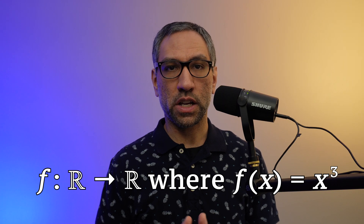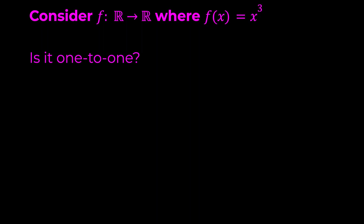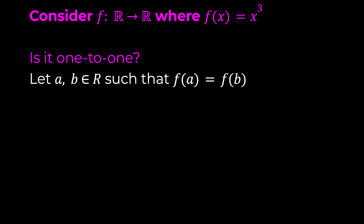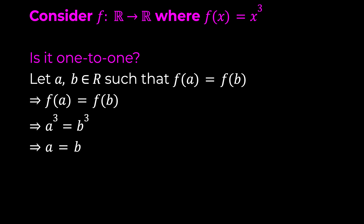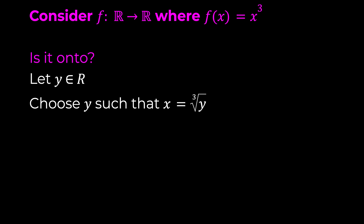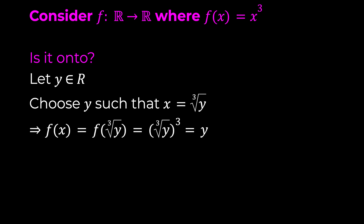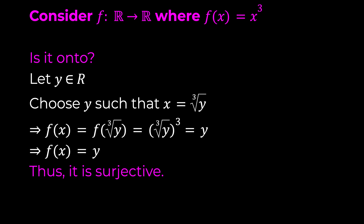Lastly, let's consider the function f: ℝ → ℝ where f(x) = x³. Is this function one-to-one? Yes. If we let a, b be elements in ℝ such that f(a) equals f(b), then a³ equals b³, and taking the cubed root gives a equals b, thus showing f is one-to-one. Is it onto? Let y be an element in ℝ and choose x equals the cubed root of y. Since the cubed root of y is a real number and f(x) equals (∛y)³, which equals y, we have found the required pre-image, so f is onto. Since f is both an injection and surjection, it is also bijective.